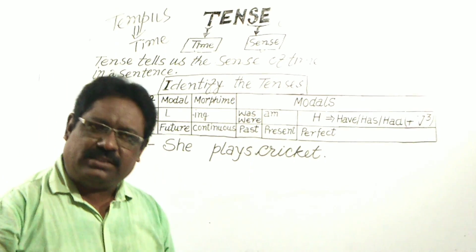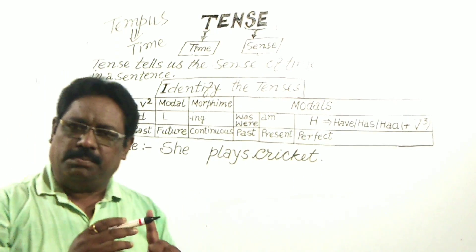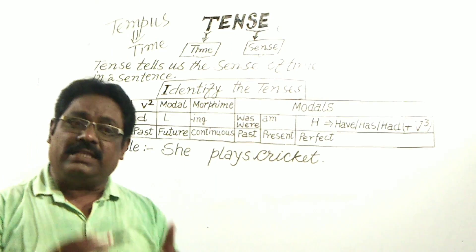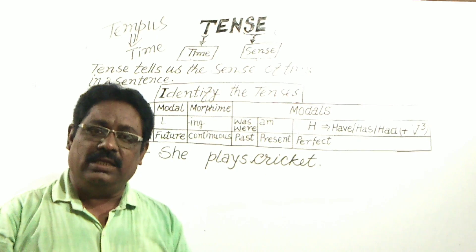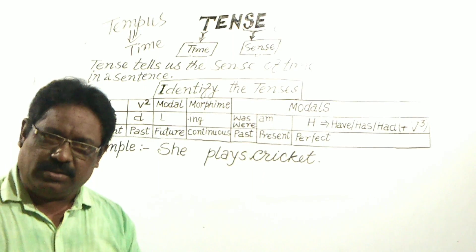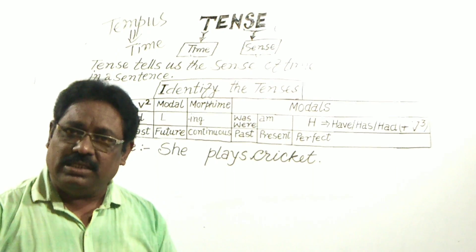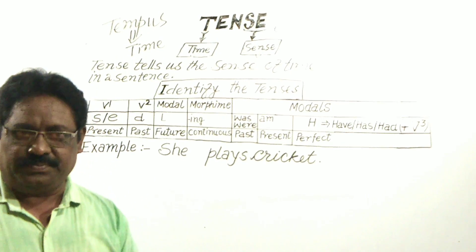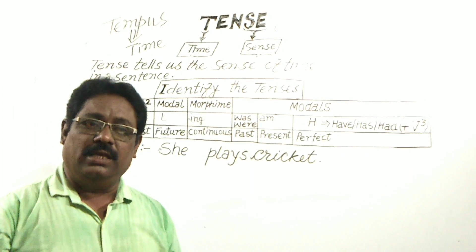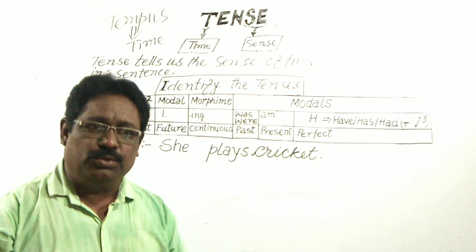The basic tenses found in the English language include: present tense, past tense — an action which was done in the past is in past tense — and future tense — an action which will be done in the future is in future tense.